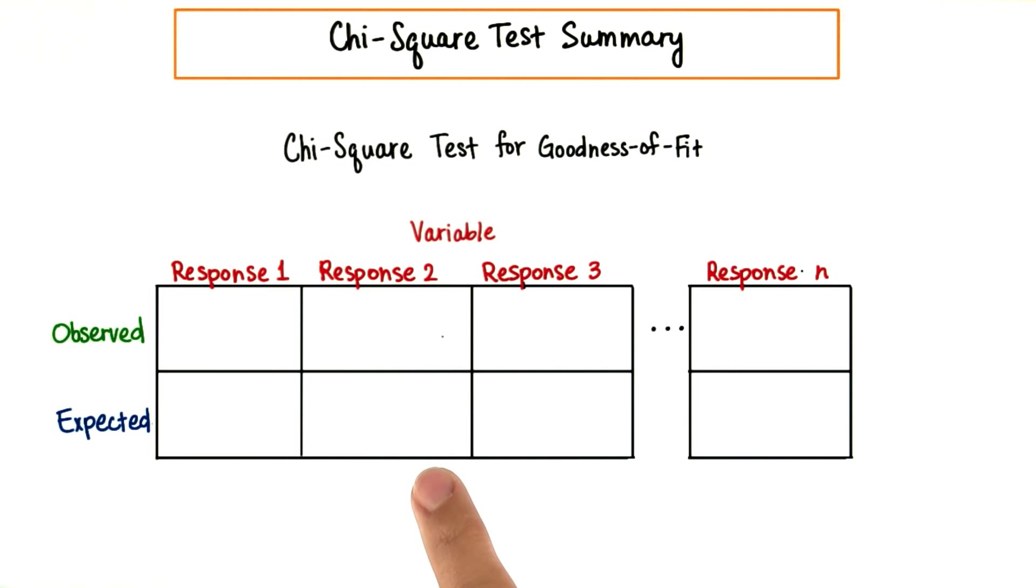In our first example, when we were helping Professor Rogers decide whether or not he should hire that guide mountaineering company, the variable was success. Our responses were successful versus unsuccessful.